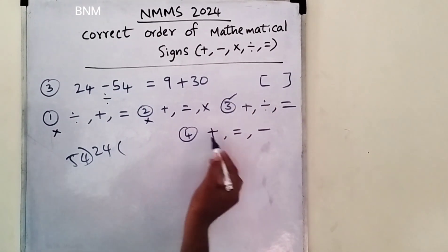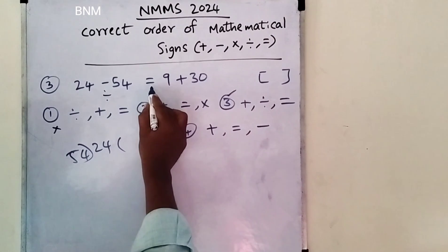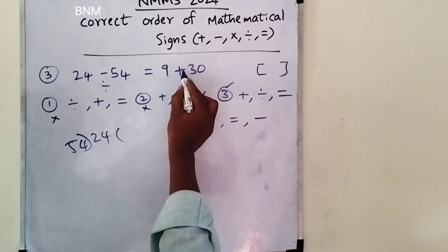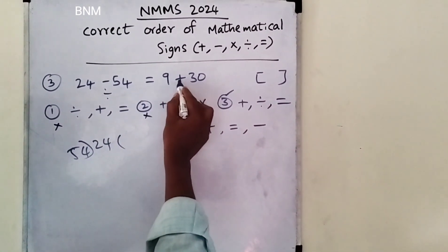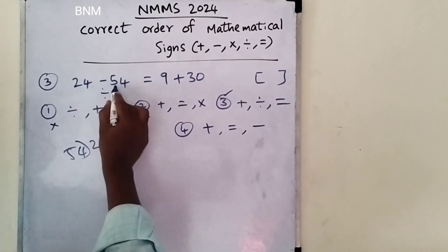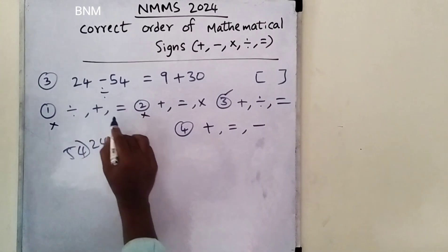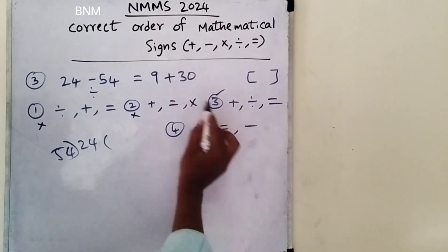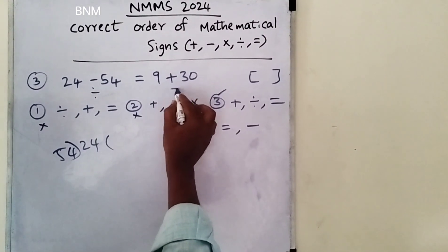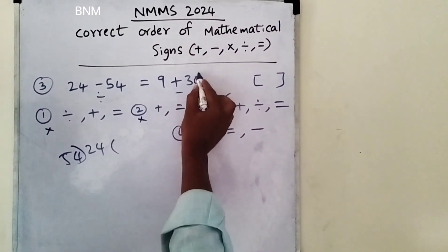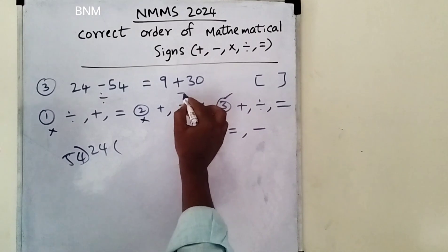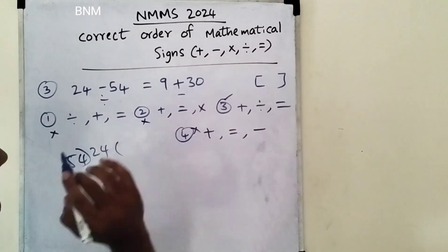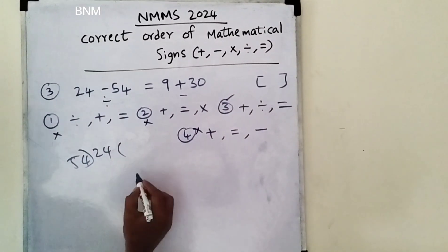Next, the fourth one. Here: plus, equal, minus. Plus 78 equal to minus. 9 minus 30 — that means the big value is minus. This is the answer.